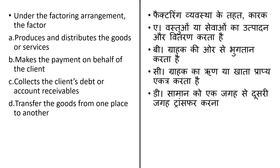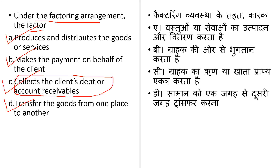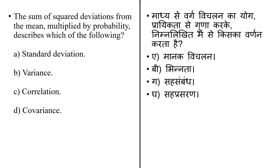A question from the previous lecture: under a factoring arrangement, the factor does which of the following? Options: (A) produces and distributes goods or services; (B) makes payment on behalf of the client; (C) collects the client's debt or accounts receivable; (D) transfers goods from one place to another. The correct answer is option C — factoring is a service where a factor is responsible for credit control and debt collection from buyers, and provides protection from bad debt loss to the firm.